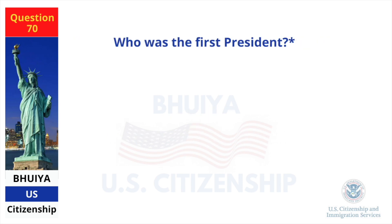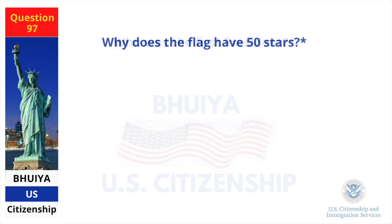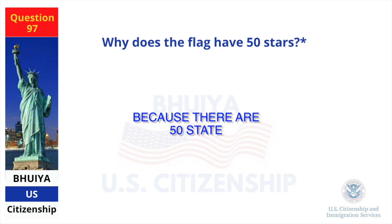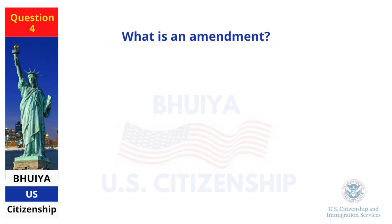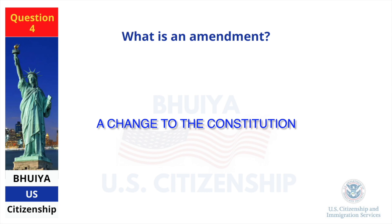Who was the first President? George Washington. Why does the flag have fifty stars? Because there are fifty states. What is an amendment? A change to the Constitution.